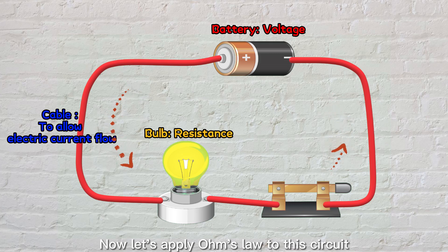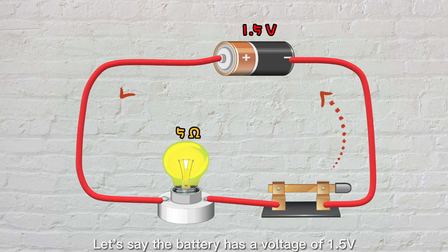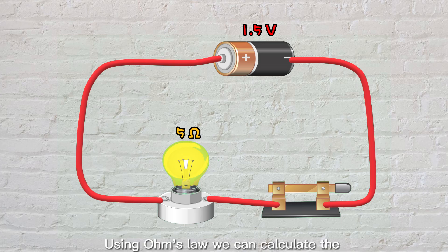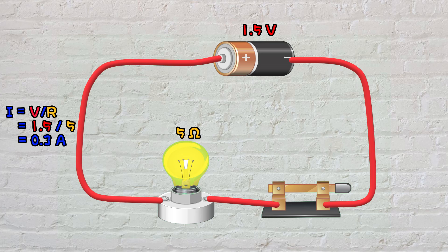Now, let's apply Ohm's law to this circuit. Let's say the battery has a voltage of 1.5 volts, and the bulb has a resistance of 5 ohms. Using Ohm's law, we can calculate the current flowing through the circuit. I equals V divided by R, which gives us 0.3 amps of current.